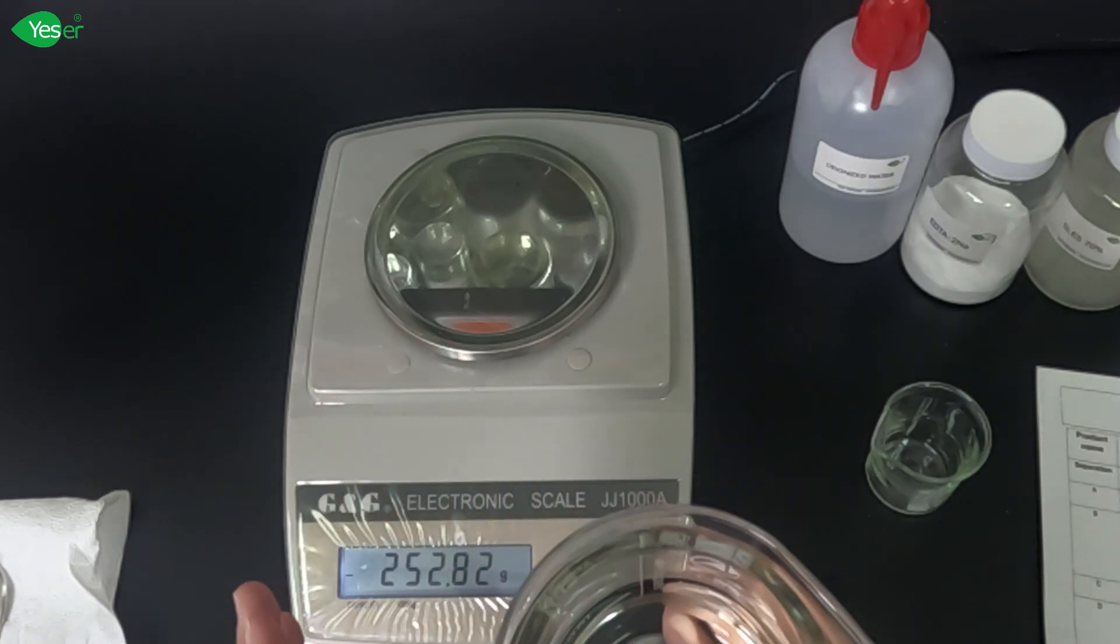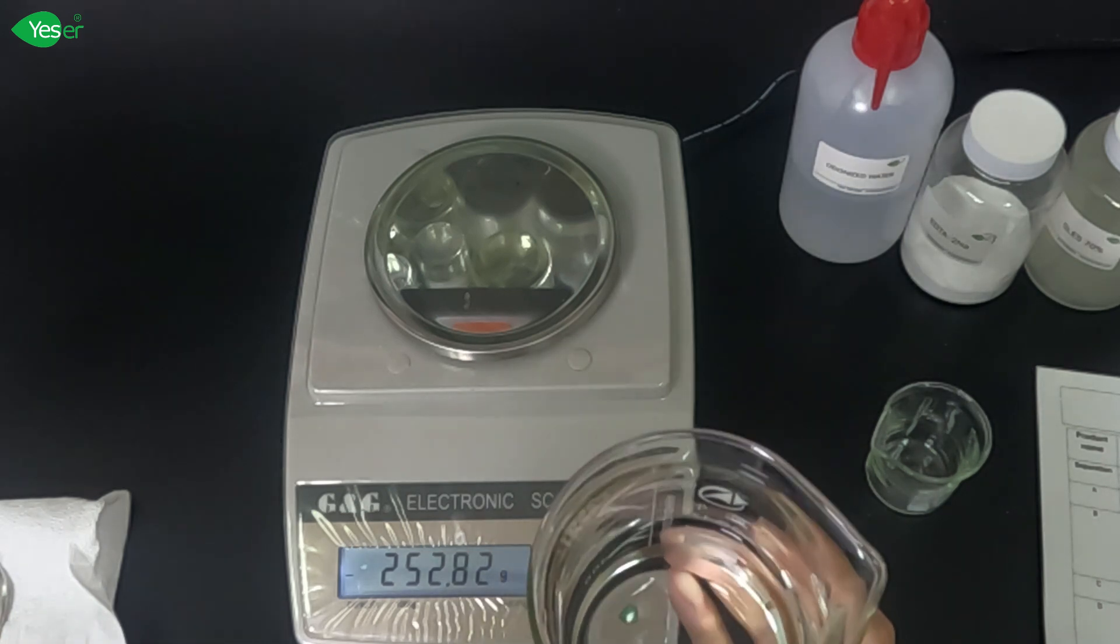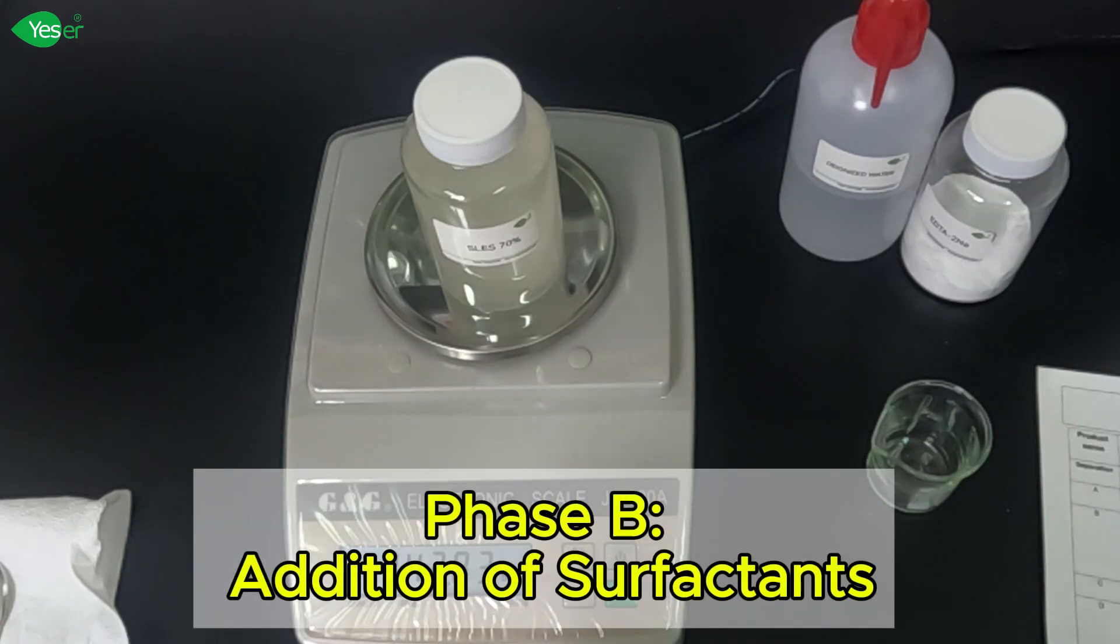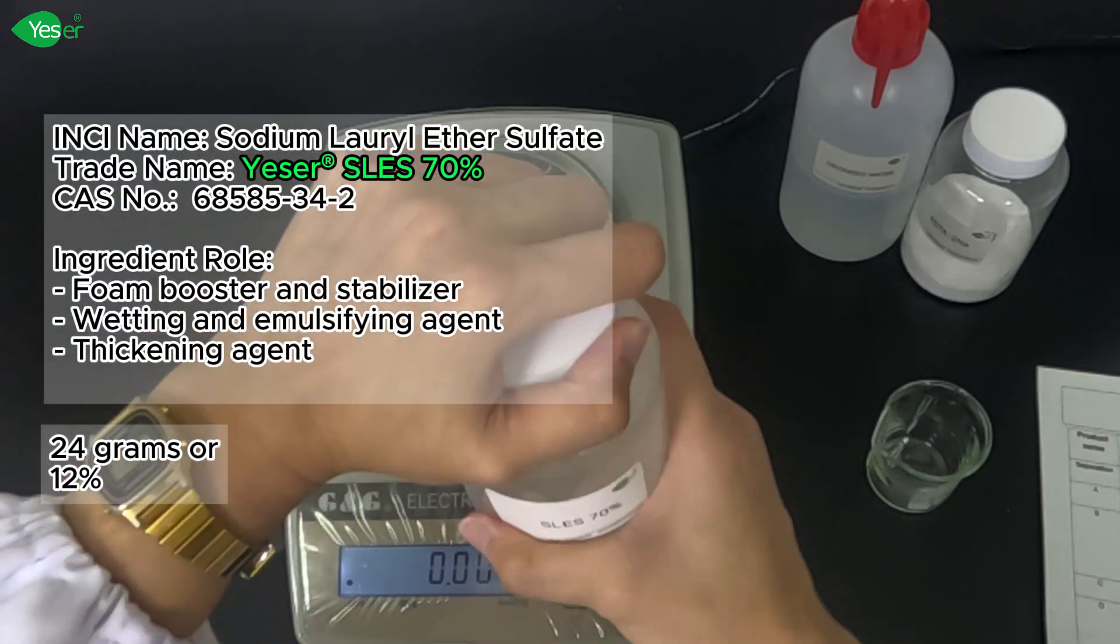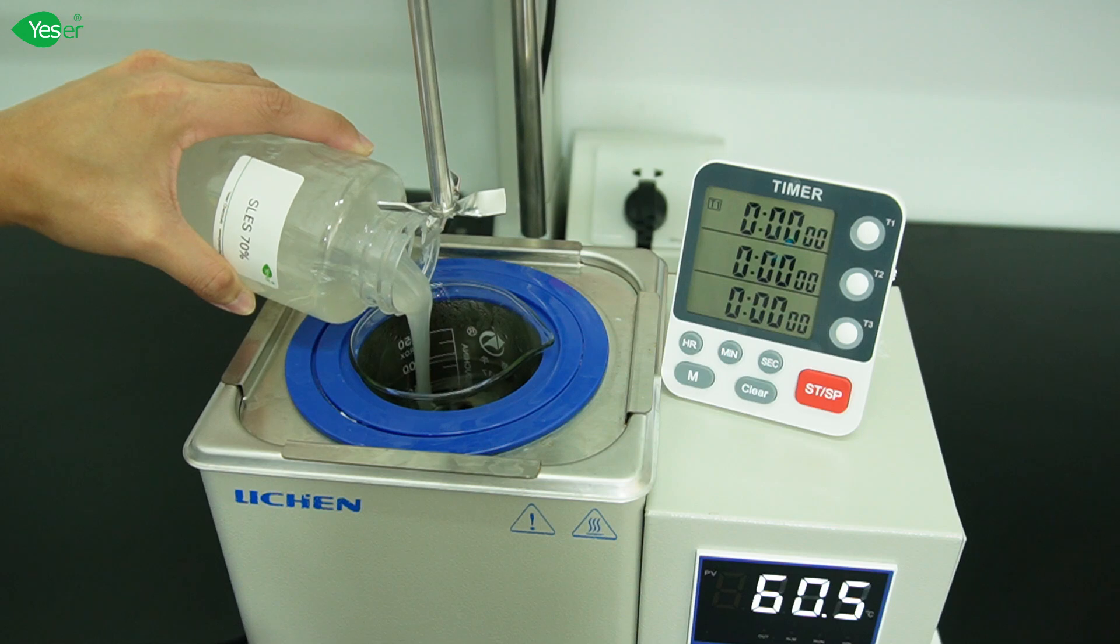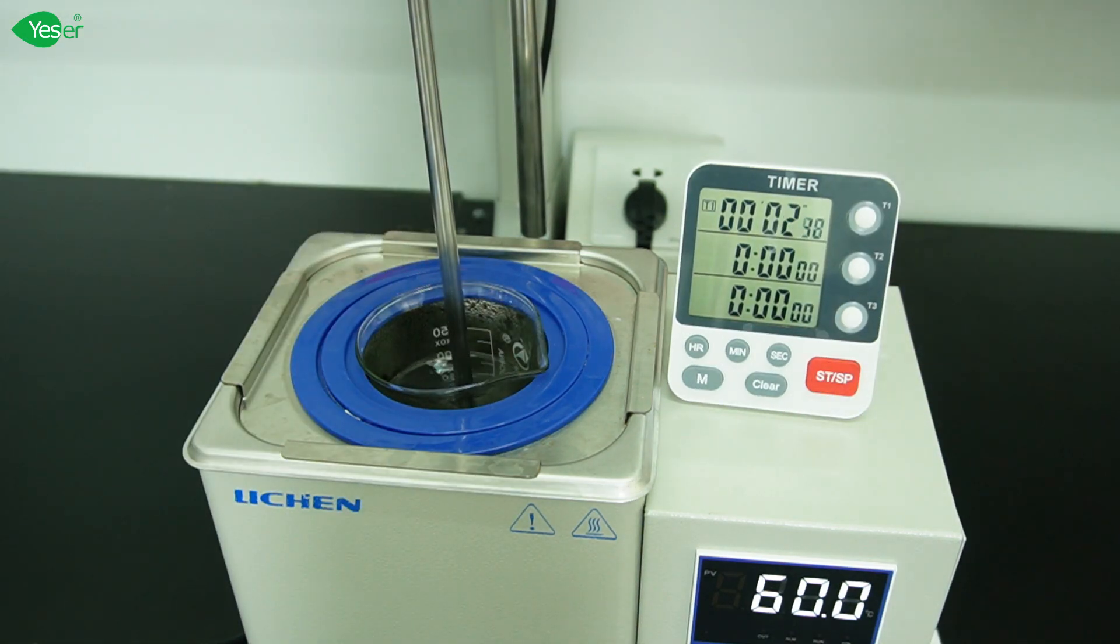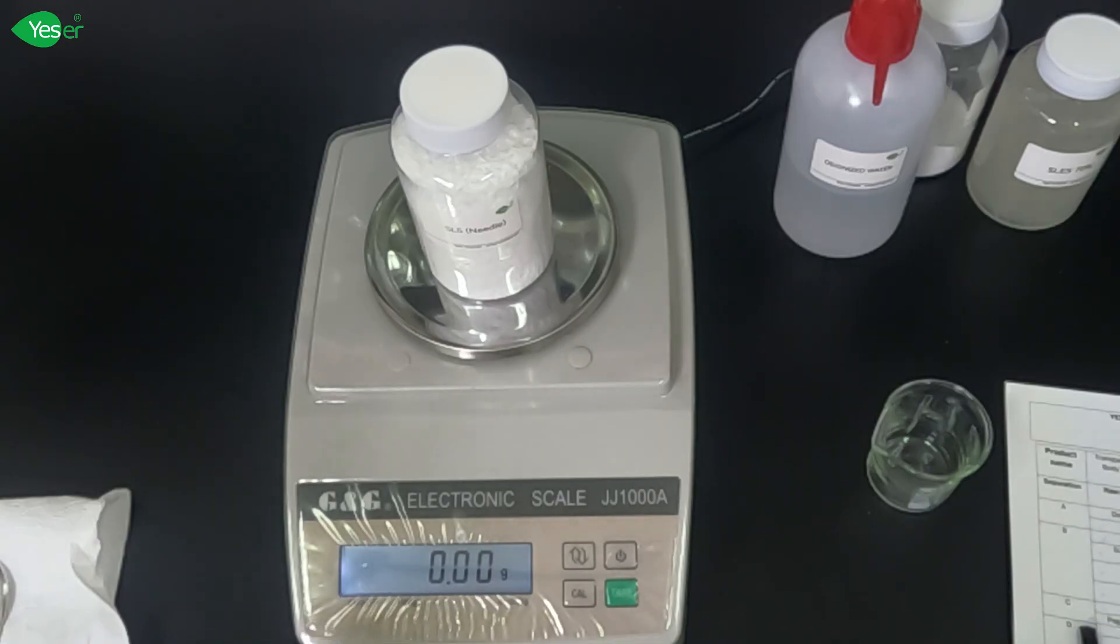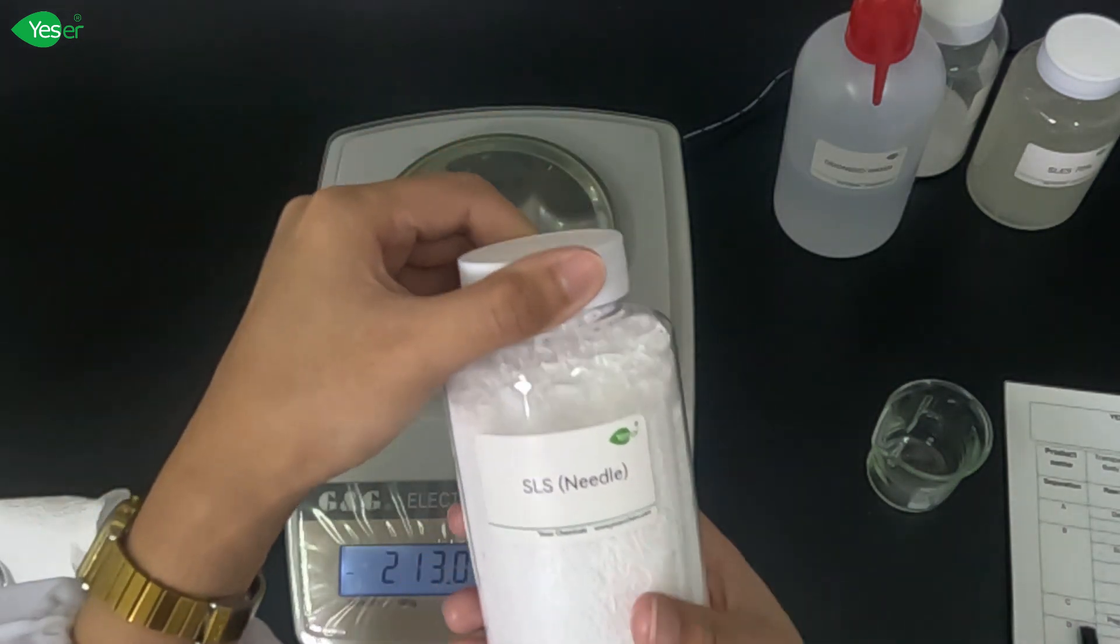Then we will add our SLES, SLS, CAB 35%, and our CDEA sequentially until all surfactants have been fully dissolved in the solution. Let's weigh about 24 grams of our SLES 70%, or 12% for this formula.